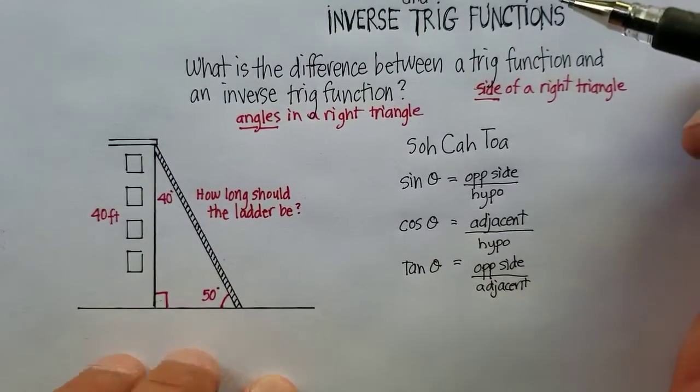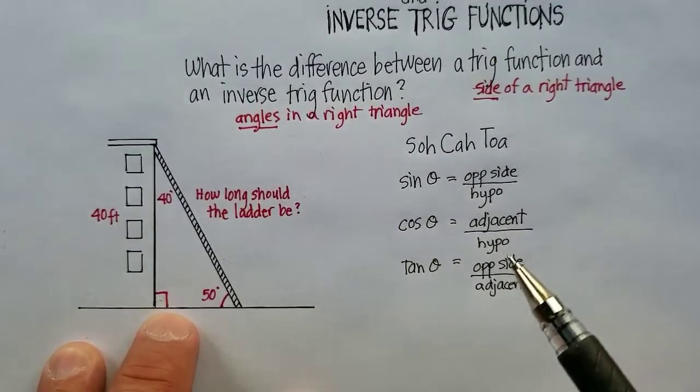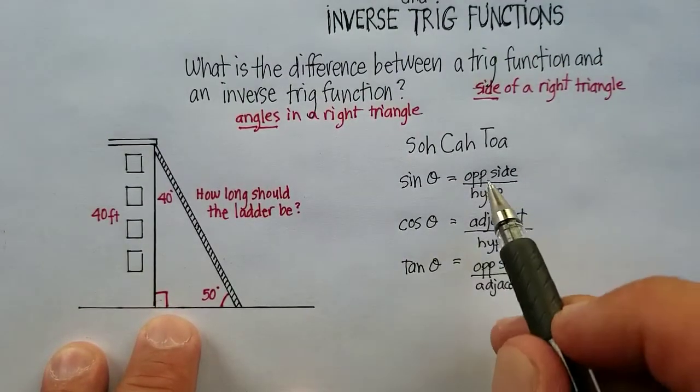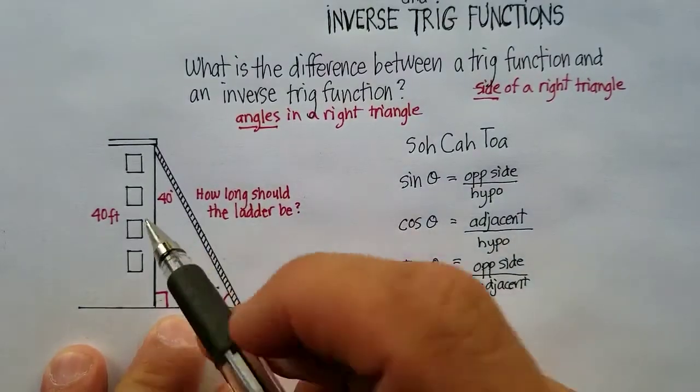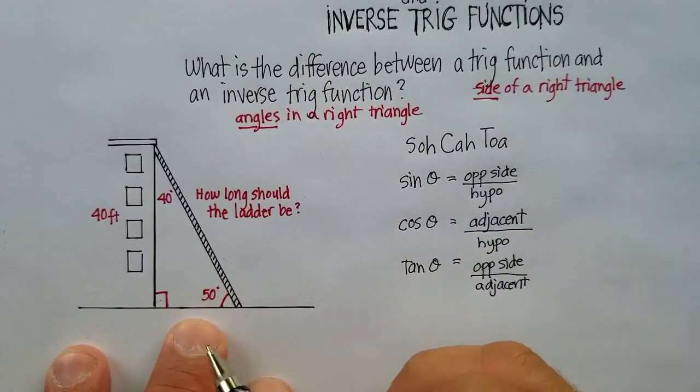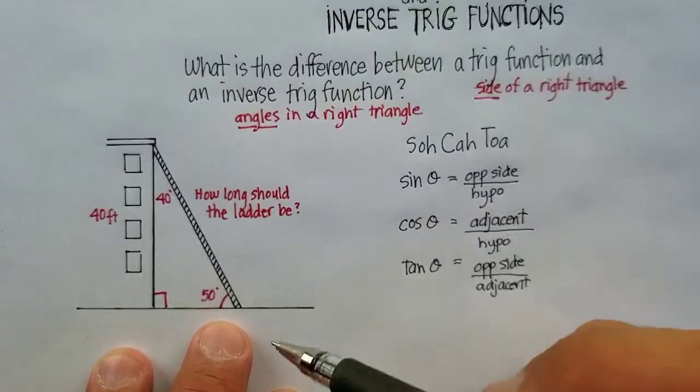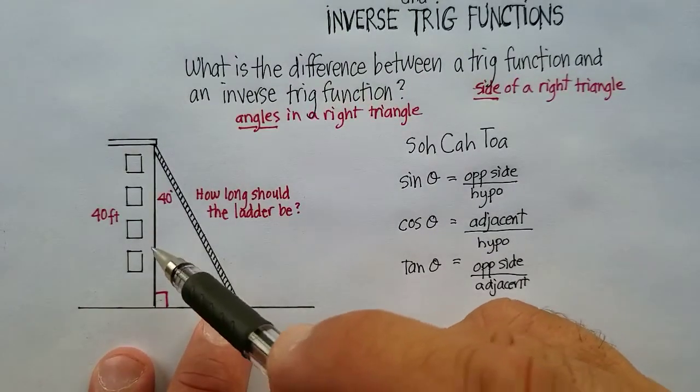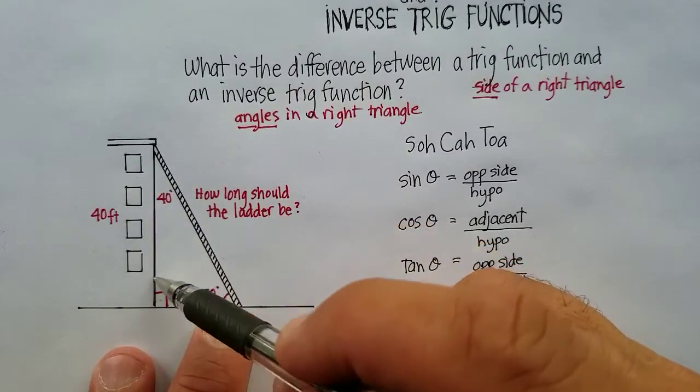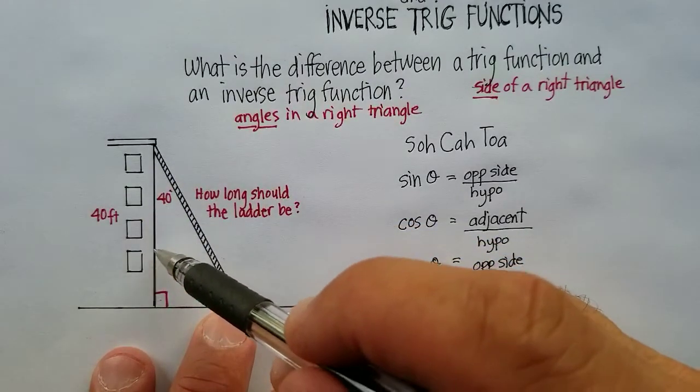So basically what you have to do here for this problem is to match up which one of these trig functions would match up to the information that I already have. So in this case, I would see that 50 degrees, I know the opposite side, right, because it's directly across from 50.